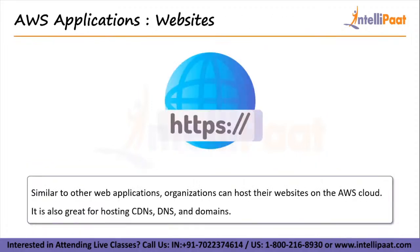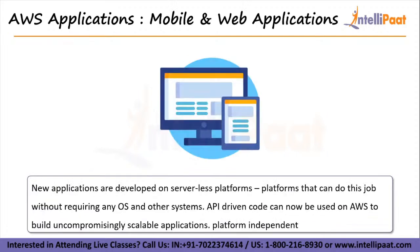Then comes websites. Amazon Web Services offers cloud web hosting solutions that provide businesses, non-profits, and governmental organizations with low-cost ways to deliver their websites and web applications. Whether you're looking for a marketing, rich media, or e-commerce website, AWS offers a wide range of hosting options. Then comes mobile and web applications. AWS offers purpose-built tools for front-end web and mobile developers through AWS Amplify, making it easier to build apps with cloud functionality. The API-driven code can now be used on AWS to build highly scalable applications.